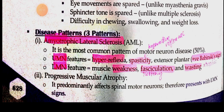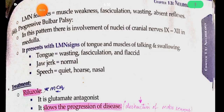In progressive muscular atrophy, lower motor neuron signs predominate because spinal motor neurons are affected. In progressive bulbar palsy, cranial nerves 9 through 12 are mostly involved. This results in lower motor neuron signs — tongue muscles and muscles used for speech and swallowing are affected. Hypoglossal nerve involvement causes tongue wasting, fasciculations, and flaccid paralysis. Speech becomes hoarse and nasal.